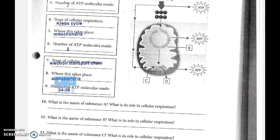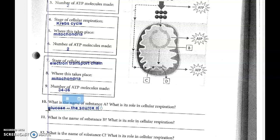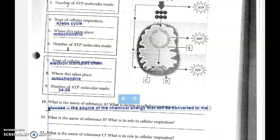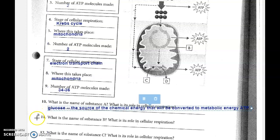Number 10 says: what is the name of substance A and what is its role in cellular respiration? Well, substance A is back up here — it's our six-carbon sugar that gets the whole thing started. That's glucose. It starts the whole process and it is the source of the chemical energy that will be converted to metabolic energy, which is ATP. Glucose is the source of that chemical energy that will be converted to metabolic energy, ATP.